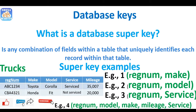If you're asked to give an example of a super key, the first is to list all columns of the table — that's a super key. Then you can form any subsets. For instance: reg + model + mileage, reg + model + service, and so on. Any combination that includes a unique attribute and any other column forms a super key.